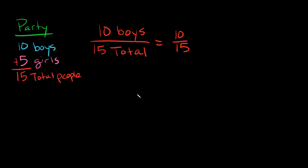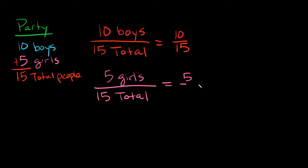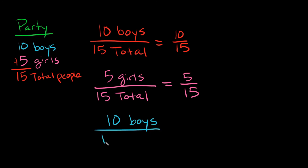What fraction of the people at the party are girls? Five girls over 15 total people — that's 5 over 15. What fraction are not girls? If they're not girls, they must be boys — so 10 boys over 15 total people, which is 10 over 15.